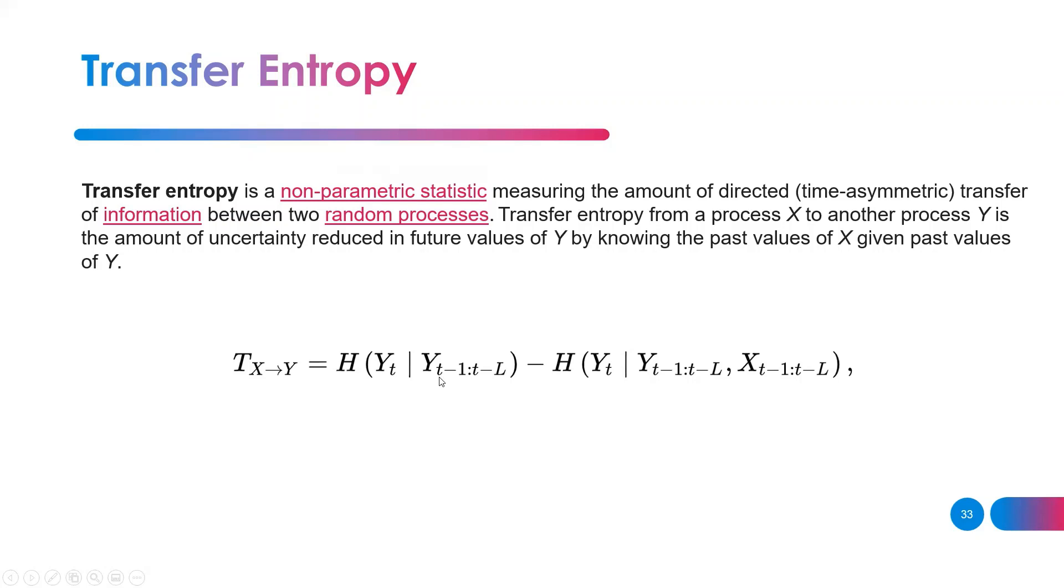One term has two variables: Y_t and the past values of Y_t. The second one looks at Y_t, the past values of Y_t, and the past values of X_t. It goes from t minus 1 to t minus L.